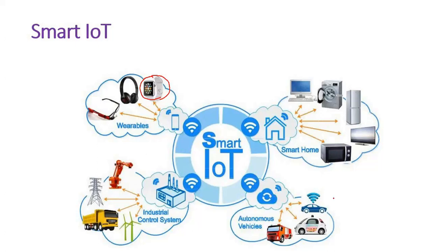Again, if you see driverless cars like Tesla or Google Car — behind that, there is a huge amount of coding. Similarly, industrial automation — if you want an industry to work automatically, that is industrial automation.